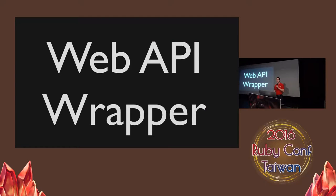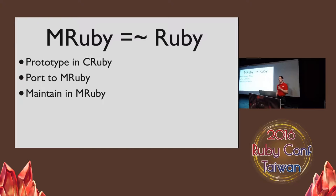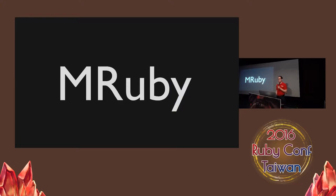My exploration of mruby and mruby CLI started with a web API wrapper. We're building a new product at Fastly with new APIs, and I wanted an easy way to interact with it so that I could demonstrate that the APIs were usable. So why not choose regular CRuby? When we use CRuby, we have to install the correct version depending on which language features we want to use, then install any gems we depend on, and keep both Ruby and gems up to date. mruby is very similar to CRuby, so we can start with a prototype in CRuby, port that to mruby, and continue maintenance in mruby.